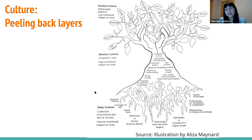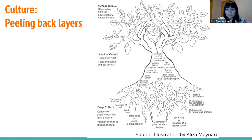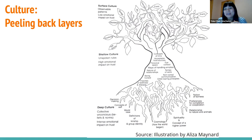Here's a model from Zaretta Hammond's book, Culturally Responsive Practices and the Brain — I recommend looking into it. This tree model is similar to the iceberg model of culture. There's surface culture, shallow culture, and deep culture. Surface culture includes the heroes and holidays — what we learn in school, cultural festivals, clothing, food, dress, language. This has low emotional impact.